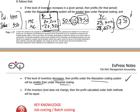Of course, in the special case where the inventory level does not change, the profit calculation for both methods will be equal to each other. One can go through numerical examples and work out the profit and loss statement under both marginal and absorption costing systems to confirm this.